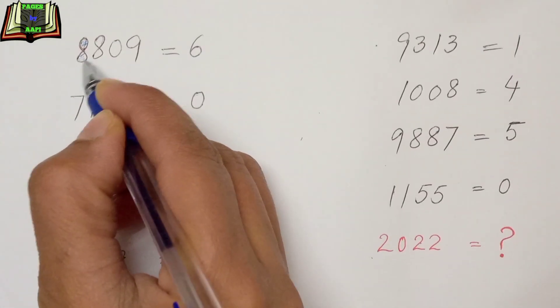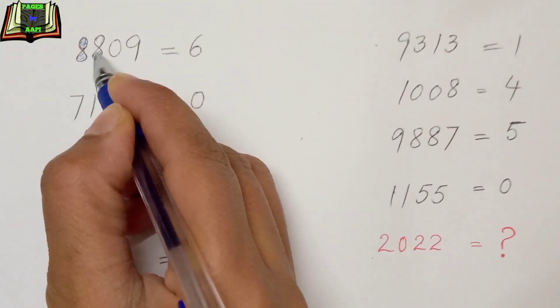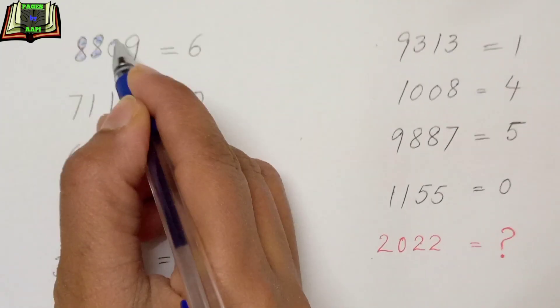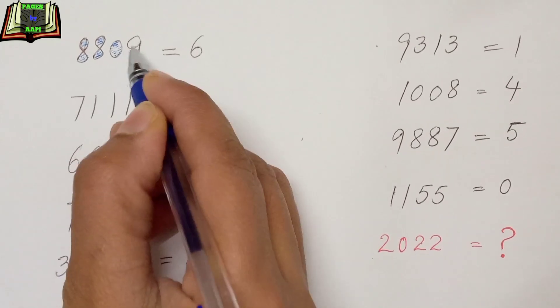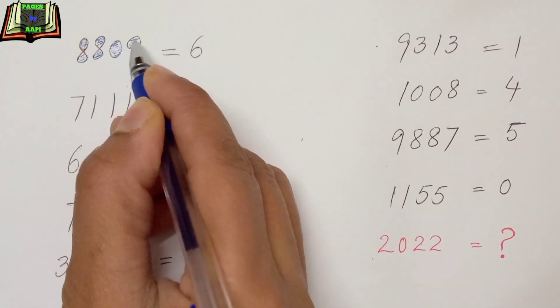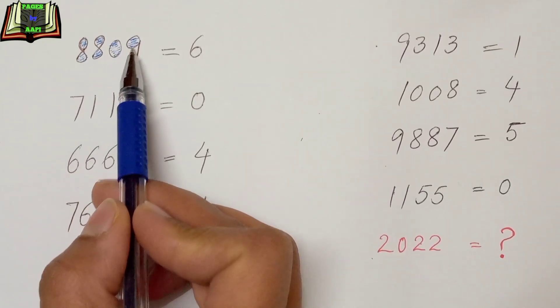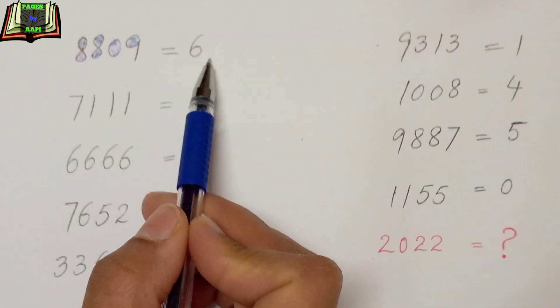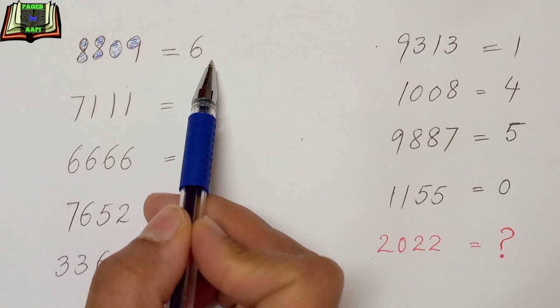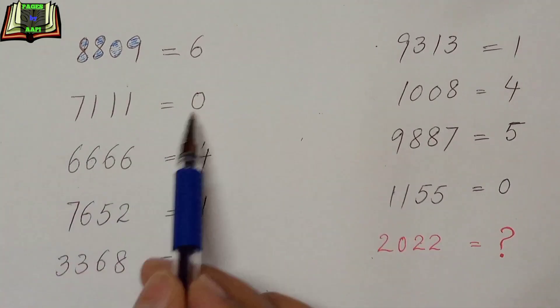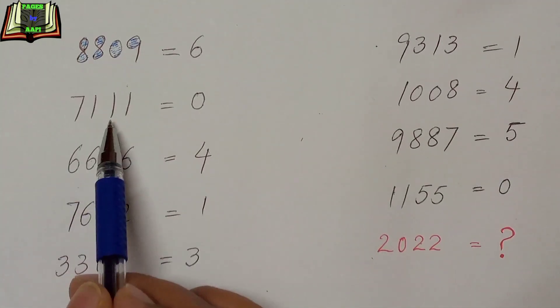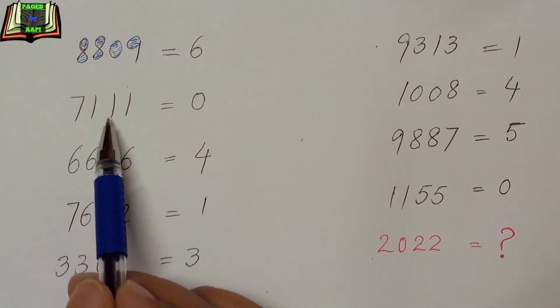For example, 1, 2, 3, 4, 5, and 6 circles are there in this number 8809. So that's why this number 8809 is equal to 6.